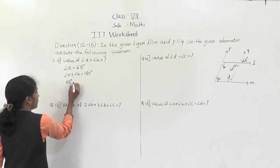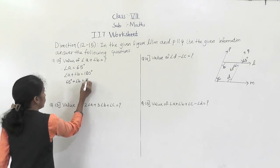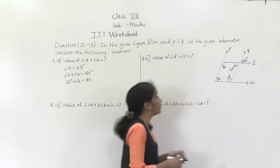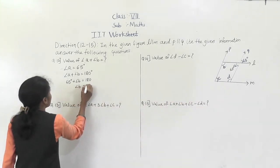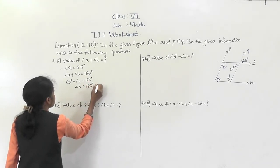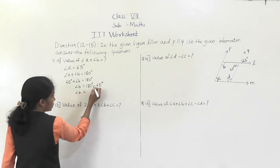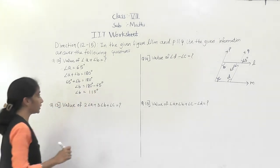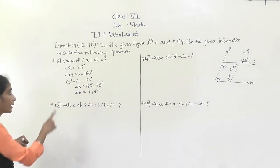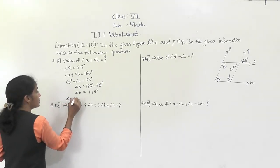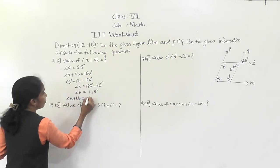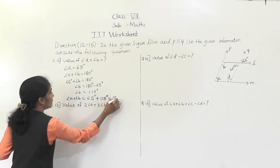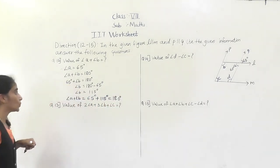So we write: 65 degrees plus angle B equals 180 degrees. Therefore angle B is equal to 180 degrees minus 65 degrees, which gives angle B equal to 115 degrees. So angle A plus angle B equals 65 plus 115, which is equal to 180 degrees.